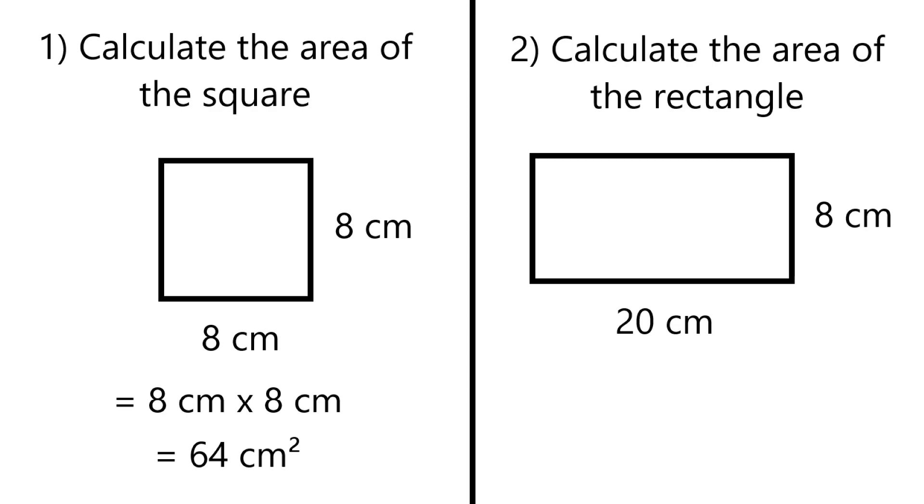I'm going to explain why it's 64 centimeters squared, then I'll move on to question two. Not to overcomplicate it, but 8 centimeters is basically 8 units of measurement—it's 8 times a centimeter.